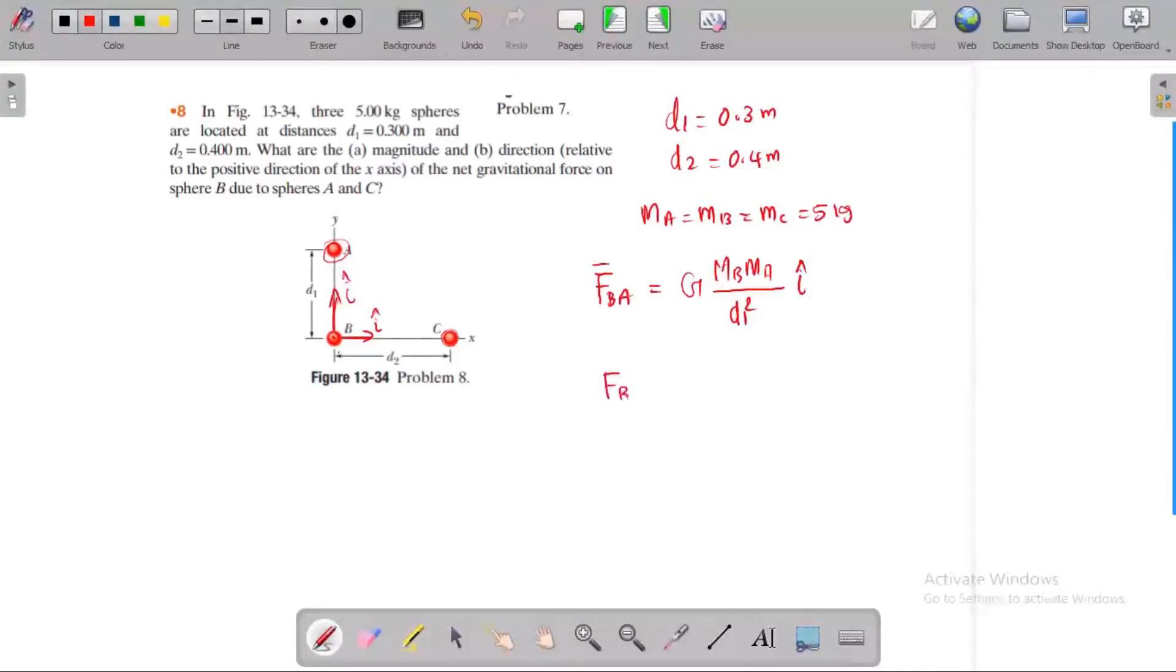Force acting on B by C equals G times mass of B times mass of C divided by d2 squared. Force B by A is in the positive j-hat direction, vertical. Force B by C is in the positive i-hat direction.